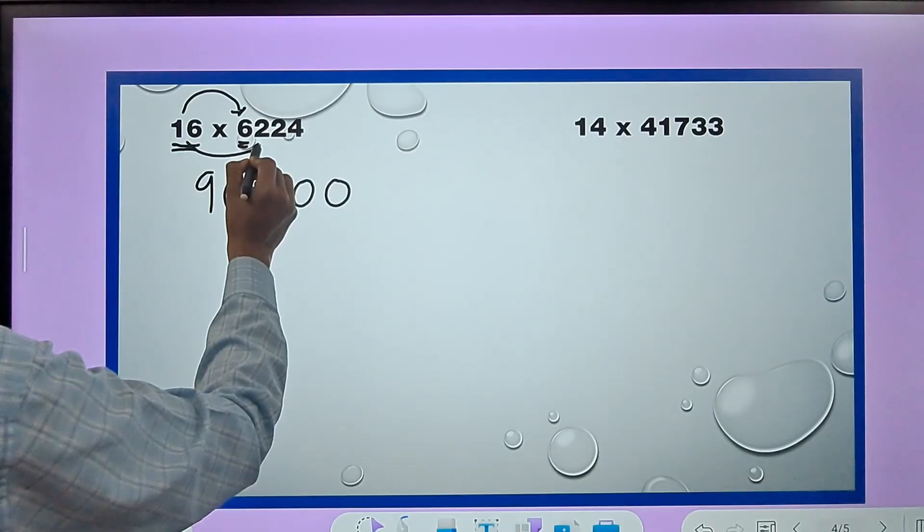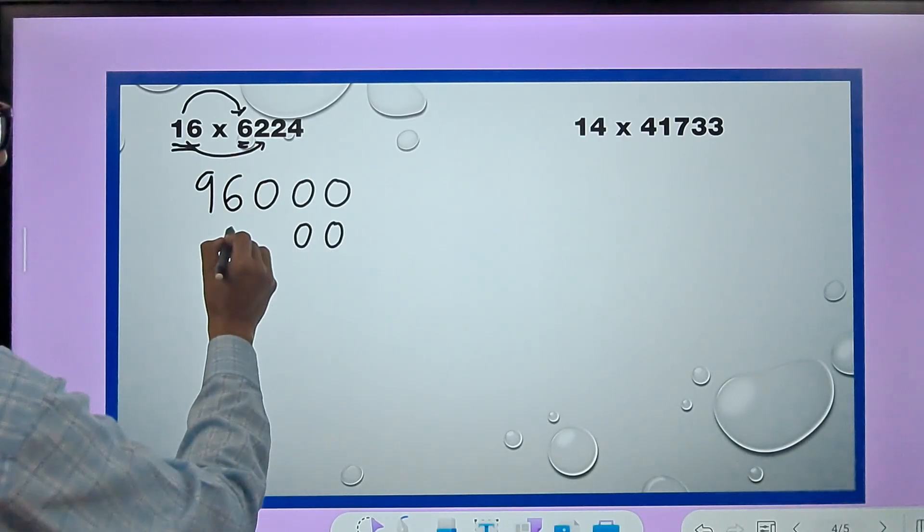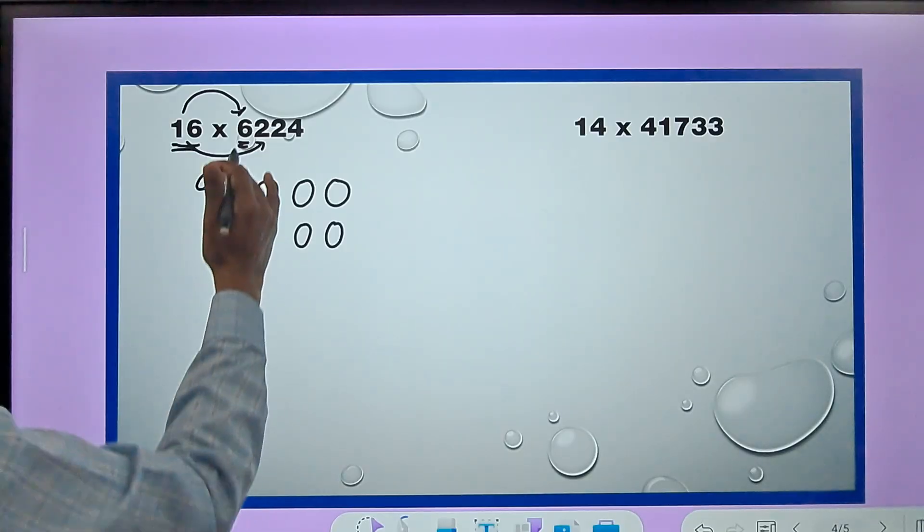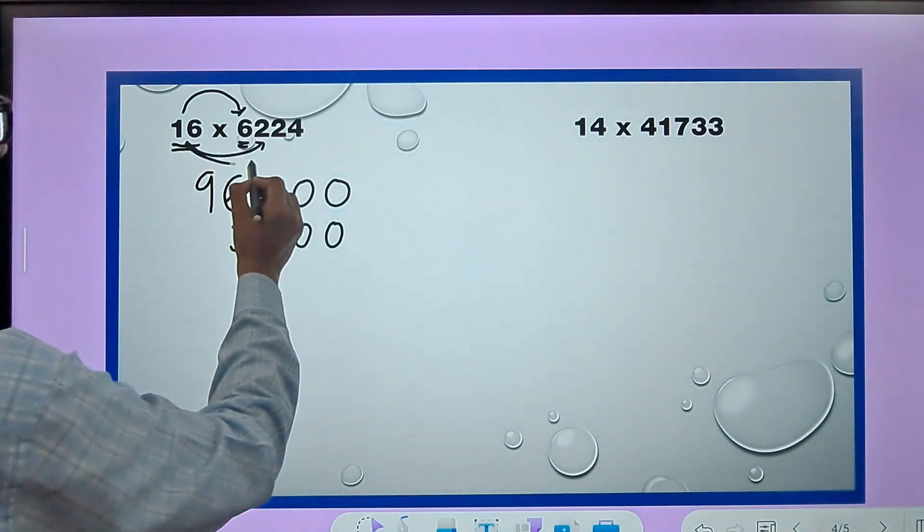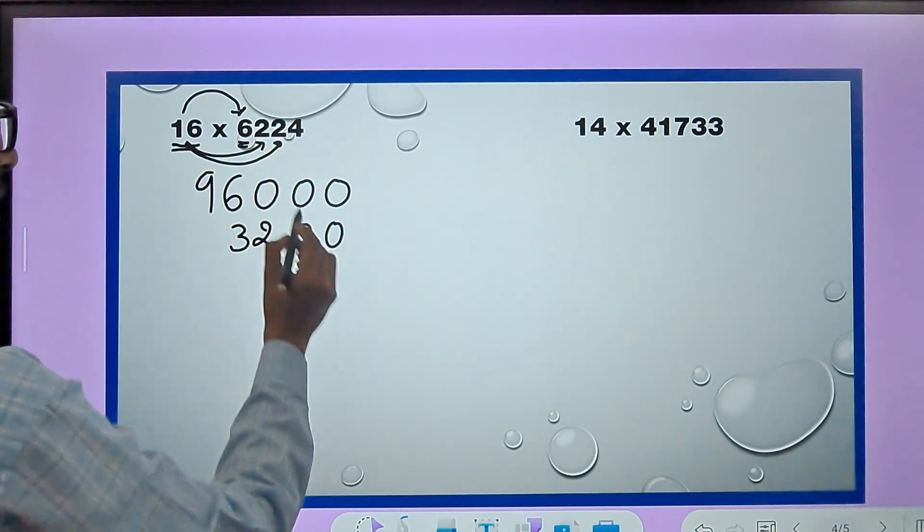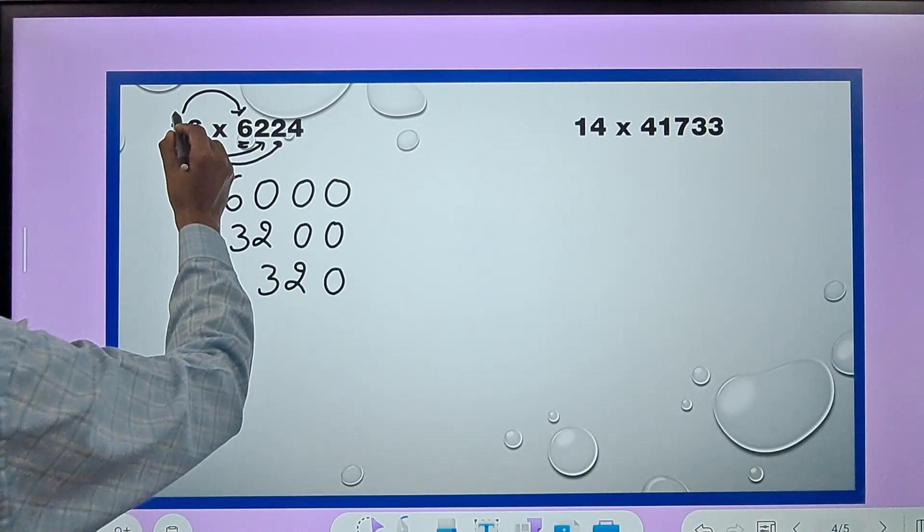Likewise, 16 multiplied by 2 - 2 zeros and a 32. See how I am writing the numbers one below the other so that it becomes easy for me to add them vertically.